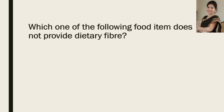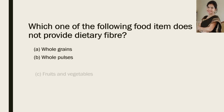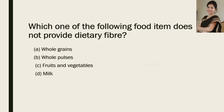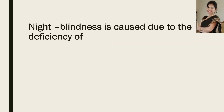Now the next question: which one of the following food items does not provide dietary fiber? Whole grains, whole pulses, fruits and vegetables, or milk? And the correct answer is milk. Now you have to tell: night blindness is caused due to the deficiency of which nutrient. No options will be given. And the correct answer is vitamin A.